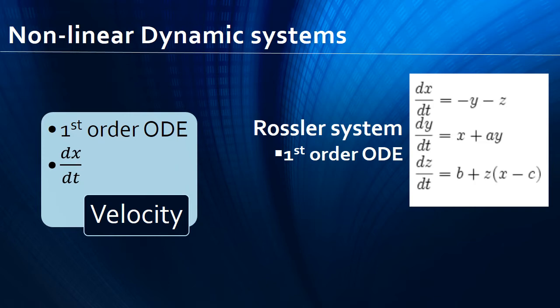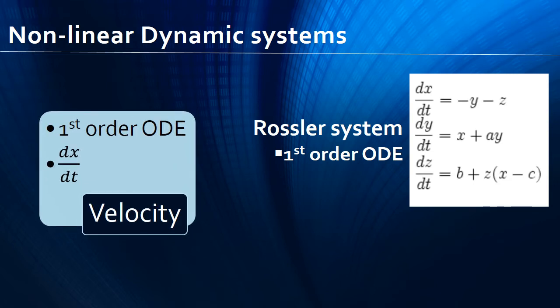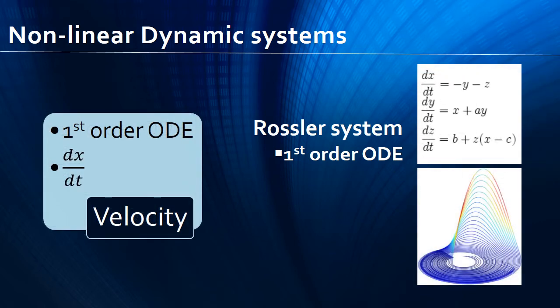Now coming back to our chaotic system: the Rössler system is a 3D system. Here we define the point in motion and its velocity is mathematically expressed as dx/dt, dy/dt and dz/dt. The dynamics of the Rössler system is governed by the control parameter values a, b and c. When we plot the system we get a pattern, and the marvelous point to be noted is that at some particular value of the control parameter the velocity of the points exhibits chaos, and hence we say that the Rössler system is a chaotic system.